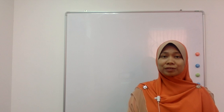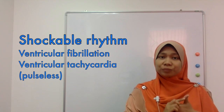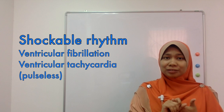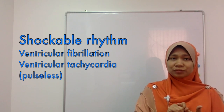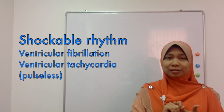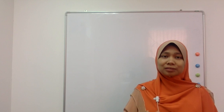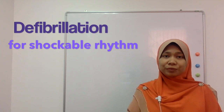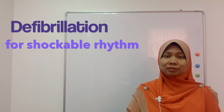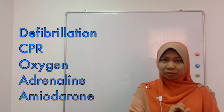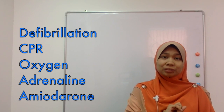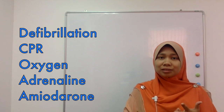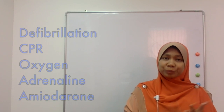For cardiac arrest it is very important to identify two rhythms: ventricular fibrillation and pulseless ventricular tachycardia. The treatment for these shockable rhythms is defibrillation. Other than that, we also give the patient CPR or chest compressions, oxygen, adrenaline, and amiodarone.